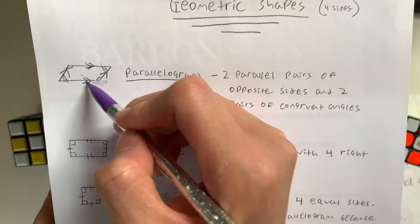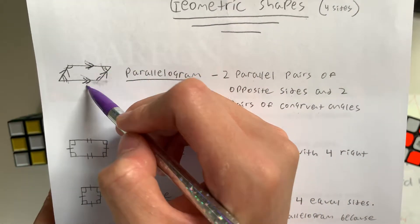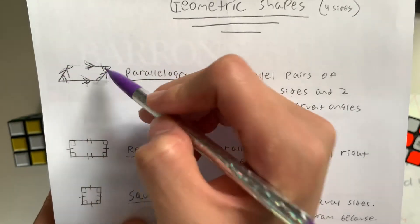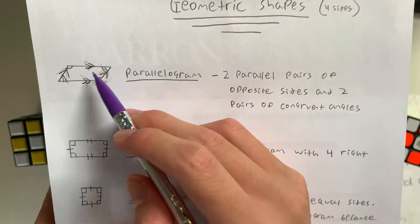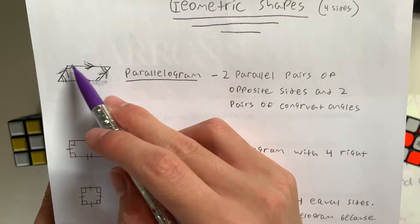And they have two pairs of parallel sides. These two are parallel as indicated by the arrows, as well as these two, which are parallel. They're all indicated by the arrows in the drawings.